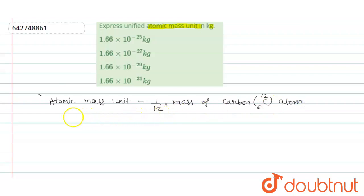So atomic mass unit is also represented as U or AMU. That is atomic mass unit which is equal to one-twelfth the mass of carbon atom. Mass of carbon atom is 1.992647 into 10 raise to power minus 26 kg.